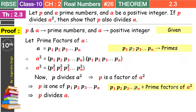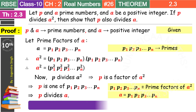So P also divides A, because A equals p1·p2·p3...pn, and P is one of those factors. So clearly we have shown to the examiner why P divides A. Therefore, because P divides A square, P also divides A — and this is exactly what we had to prove. So we can write: hence verified.